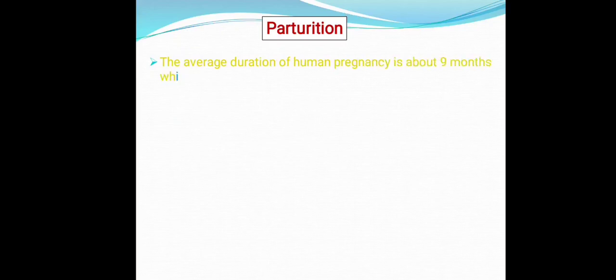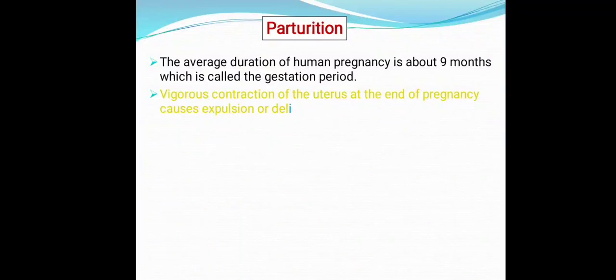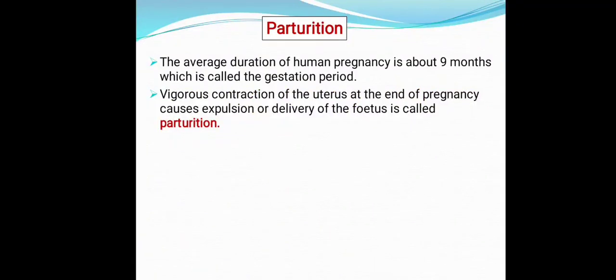After complete development of the fetus, the process of parturition takes place. The average duration of human pregnancy is about nine months, which is called the gestation period. Vigorous contractions of the uterus at the end of pregnancy cause expulsion or delivery of the fetus — this is called parturition.